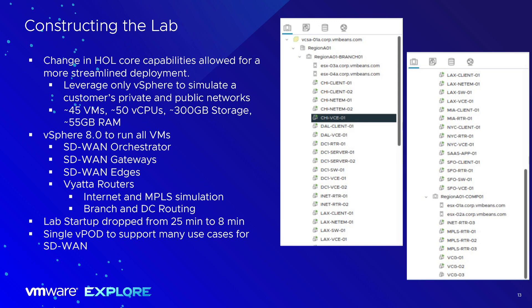A little bit about the lab architecture. Every year we try to optimize and speed up deployment. These vPods are self-contained. This year we slimmed down to about 45 VMs running with about 50 vCPU, roughly 300 gigs of storage, and 55 gigs of RAM. We've upgraded to vSphere 8.0 to run all our hypervisors. The orchestrator sits at a layer-one level — a huge performance improvement from last year when we saw issues with it sitting inside the layer-two VMs.